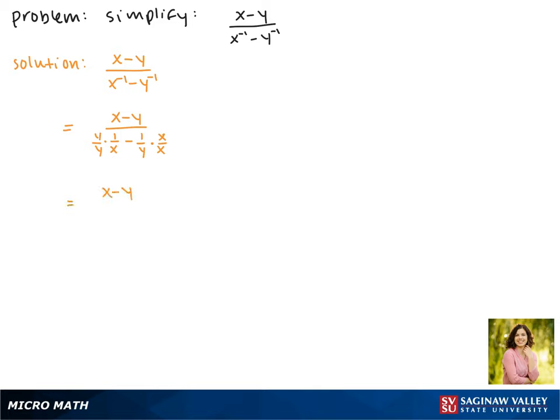Again, the numerator is going to stay the same, and now in the denominator we get y over xy minus x over xy.